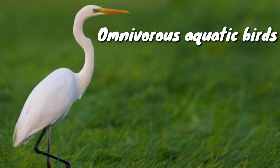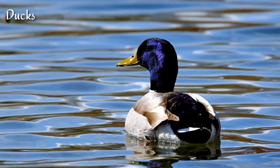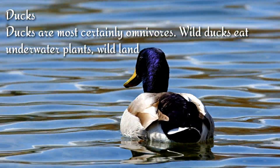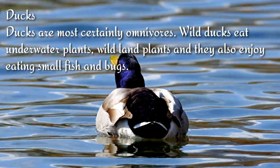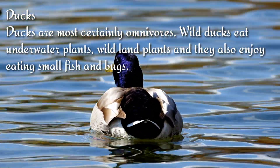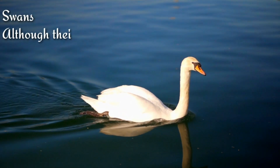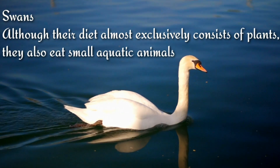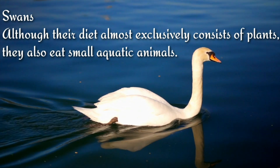Aquatic birds that are omnivores include cranes, with some types being omnivores, and ducks, which are most certainly omnivores. Wild ducks eat underwater plants, wild land plants, and they also enjoy eating small fish and bugs. Swans, although their diet almost exclusively consists of plants, also eat smaller aquatic animals.